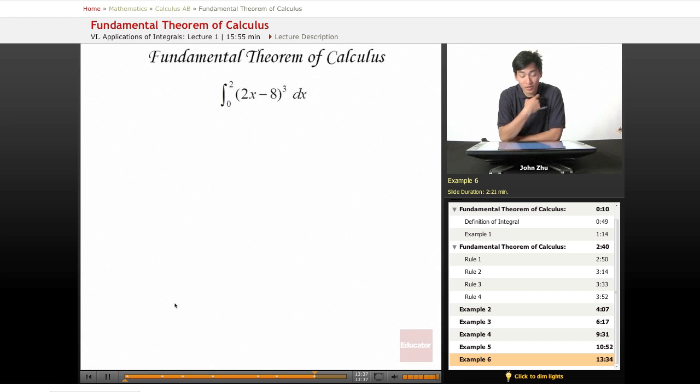So let's try to use u equals 2x minus 8, du equals 2dx, dx equals 1 half du.